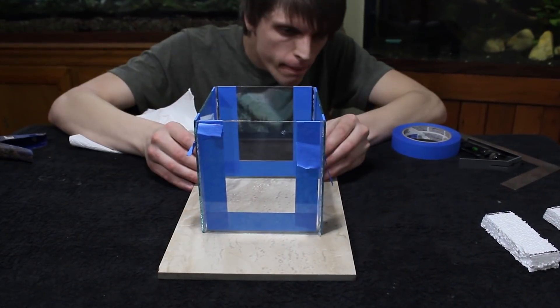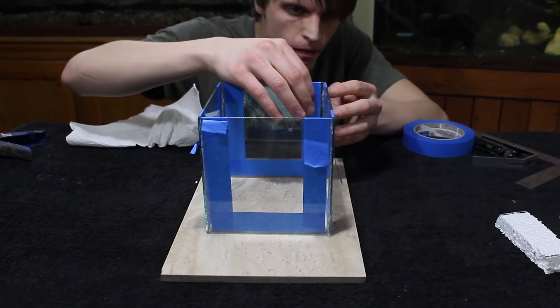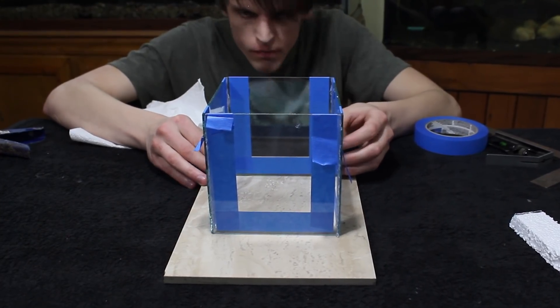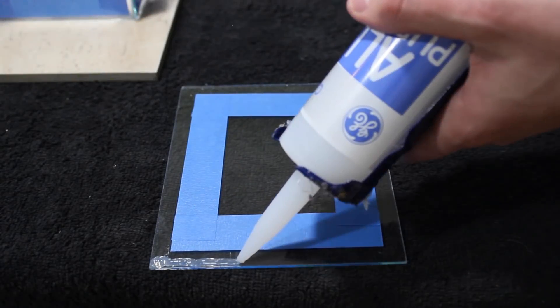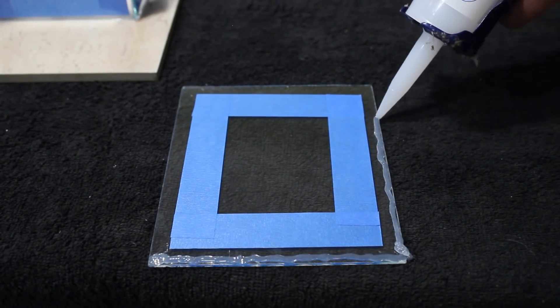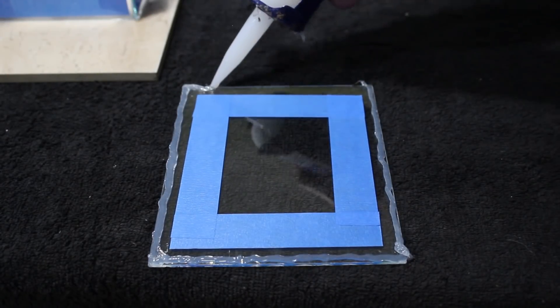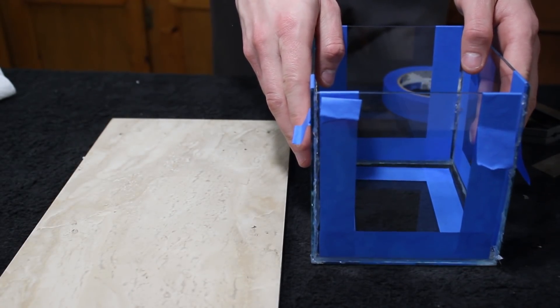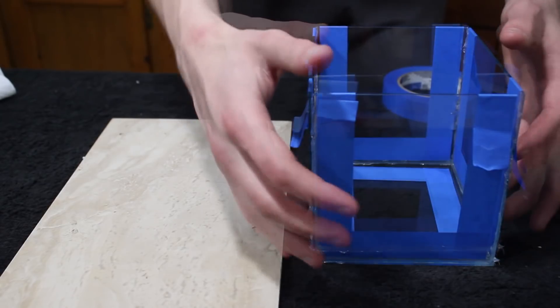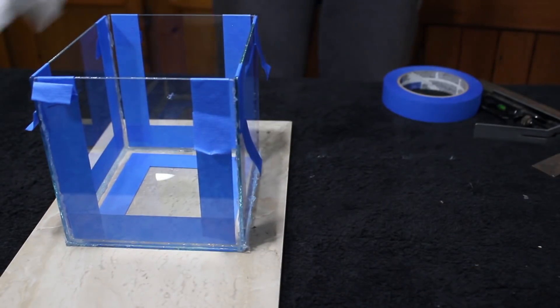Once all of the pieces were together I adjusted everything to make sure it was even. Next I ran a bead of silicone along the bottom pane of glass. Then I firmly placed the top portion of the aquarium onto the silicone bead. Afterward the aquarium was transferred back onto the tile.